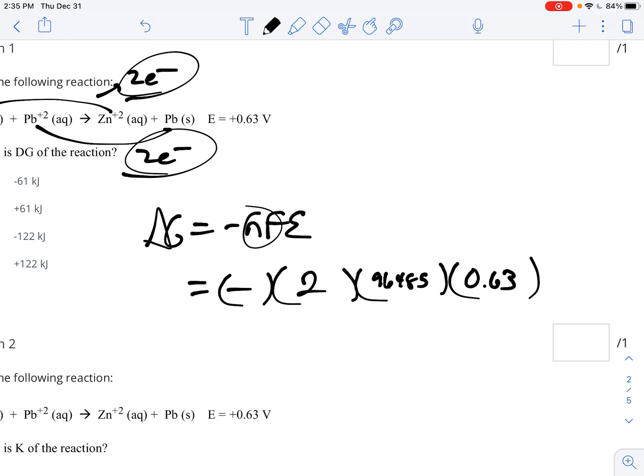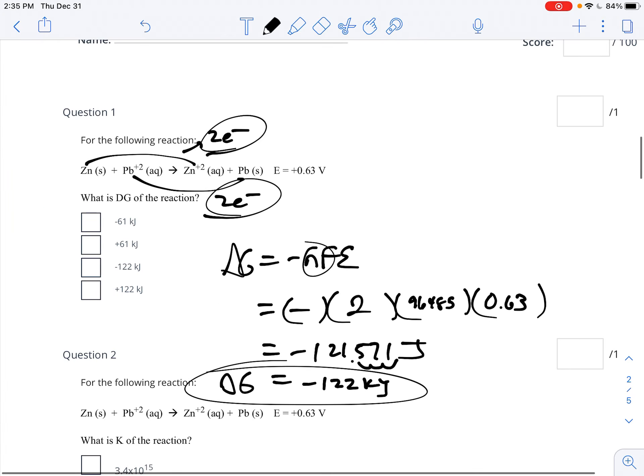So it's 2 times 96,485 times 0.63, gets you negative 121,571. And remember that is in joules. So if we want to turn that into kilojoules, we divide it by 1,000. And so you're looking at really negative 122 kilojoules there for delta G. So negative 122 kilojoules is your guy.